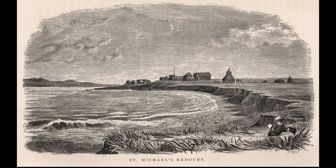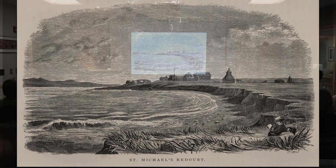There are various illustrations in the book based on drawings done by Henry Elliott, who was also associated with the Coast Survey and was a major protector of fur seals in the Pribilof Islands. This is St. Michael — the Russian enclave before the sale of Russian America. That's Henry Elliott sketching himself sitting next to William Dahl. They're looking at the Russian enclave — the Orthodox Church, the Redoubt, the blockade house, the whole nine yards.